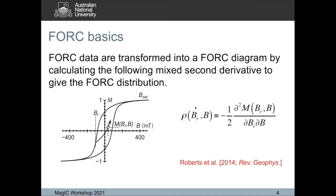We calculate the FORC distribution rho using a mixed second derivative. The second derivative by definition amplifies measurement noise. A lot of people just go to their VSM or AGM and make measurements without worrying about this. Chris Pike and Ramon Egli go to extreme measures to make the least noisy measurements possible. I really urge people to make the best measurements possible because this second derivative really does bad things, but we need it to get the FORC distribution.